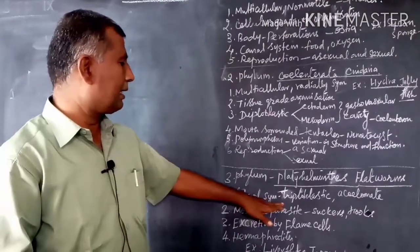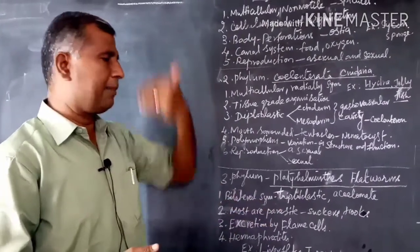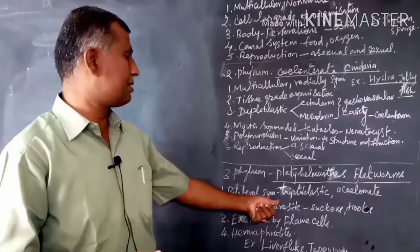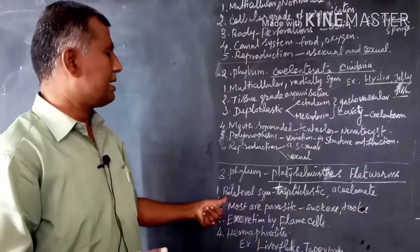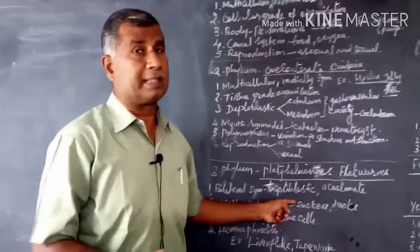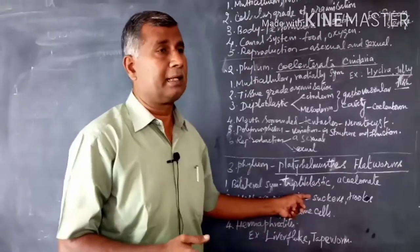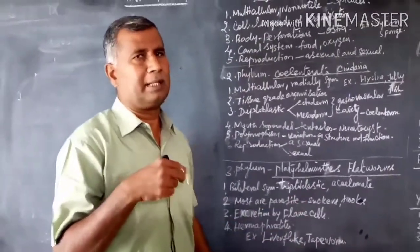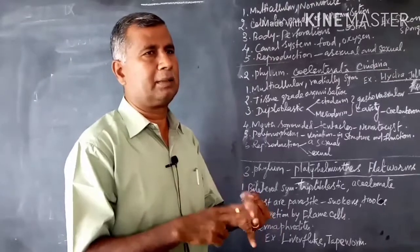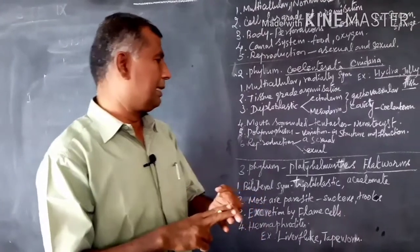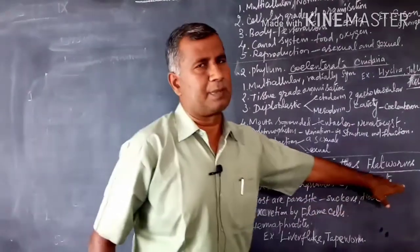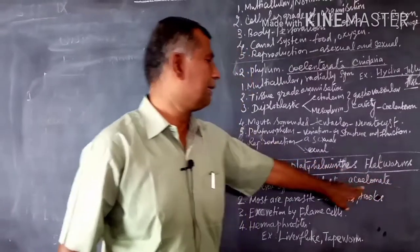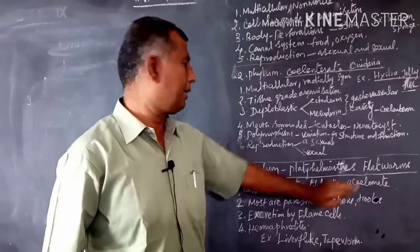The third phylum is Platyhelminthes. They are bilaterally symmetrical – the body can be cut into two equal halves. They are triploblastic, which means the body wall has three germ layers: ectoderm, endoderm, and mesoderm. But no coelom is present. That's why they are called acoelomate animals.